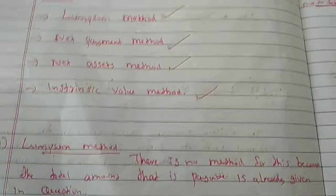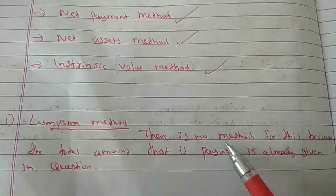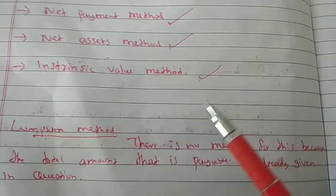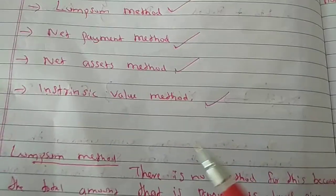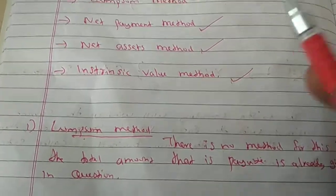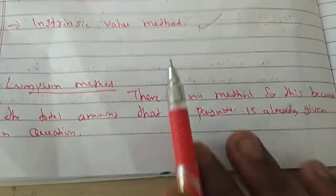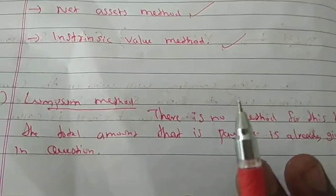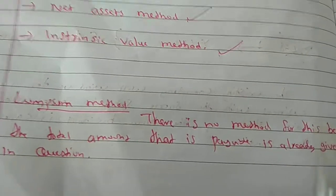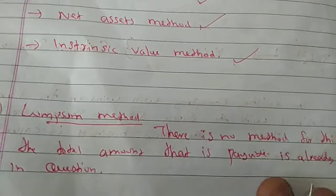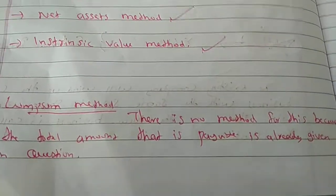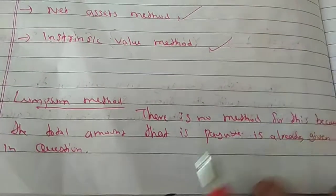See the first method — that is the Lumpsum method. In this method, the amount agreed upon is taken as the purchase consideration. The Lumpsum method is the simplest method because we don't have any difficulty in calculating the purchase consideration — maximum questions use this method.